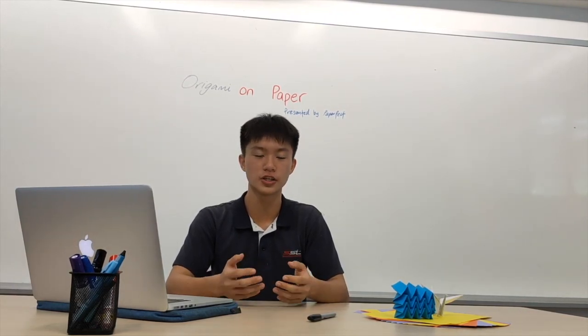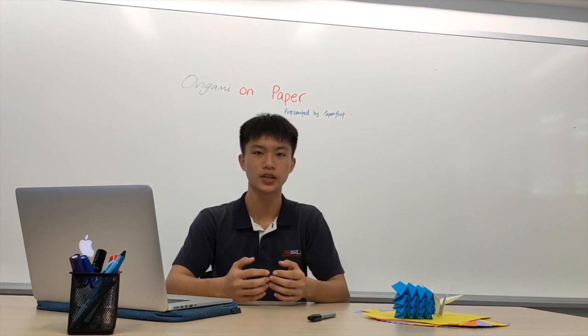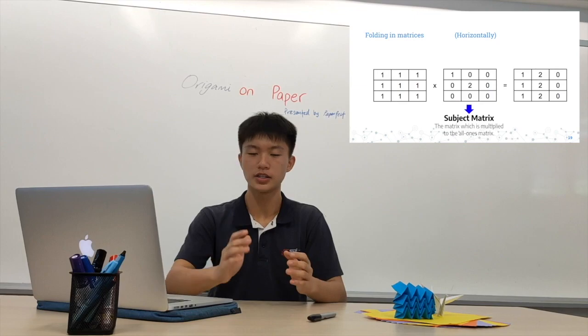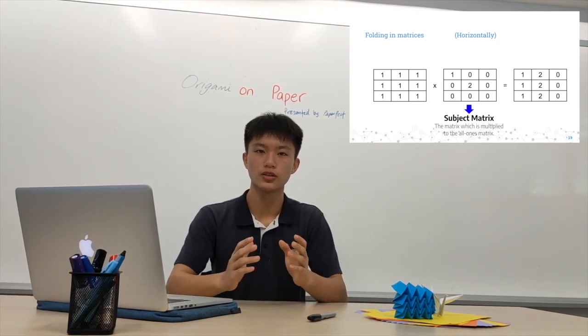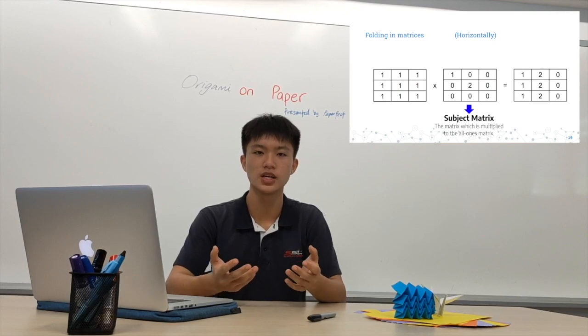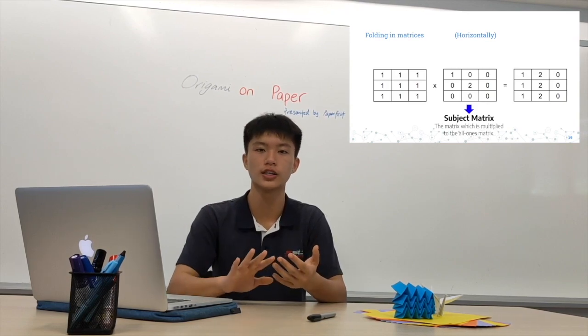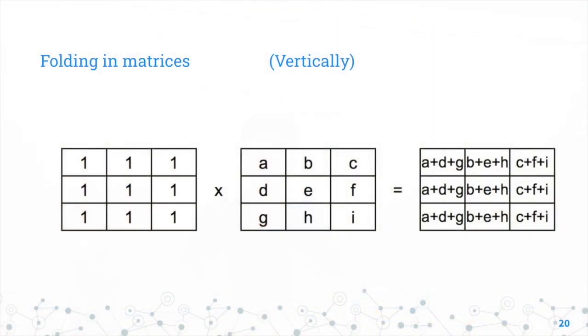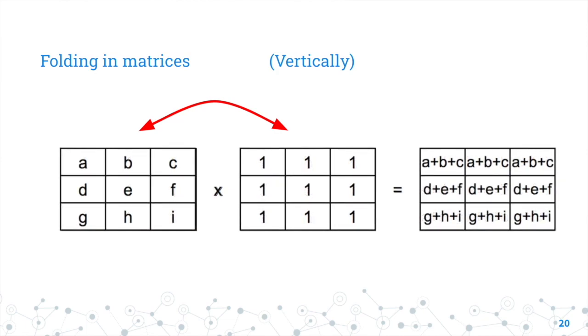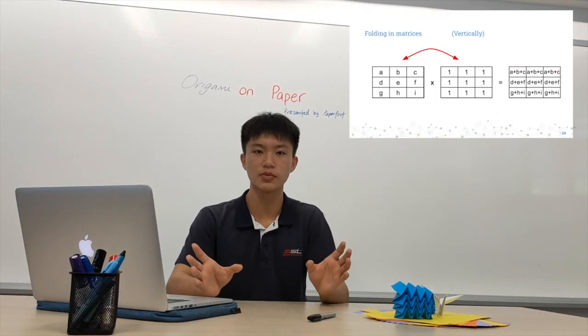So if we are able to fold it horizontally, are we able to fold it vertically? So if you look back at the first matrix formula, when we try to manipulate the numbers in the subject matrix, we found that it does not affect the way that it is being folded. It always still folds horizontally. So now we went into a different approach. Instead of trying to change the numbers in the subject matrix, we decided to change the formula itself. So what we did is that we swapped the positions of the subject matrix and the all-ones matrix. So that now the subject matrix is on the left and the all-ones matrix is on the right. We didn't actually change any numbers at all.